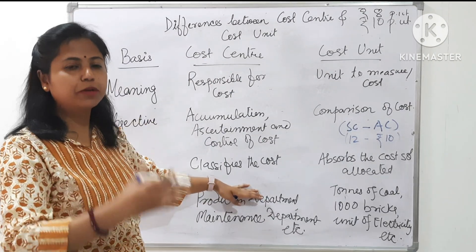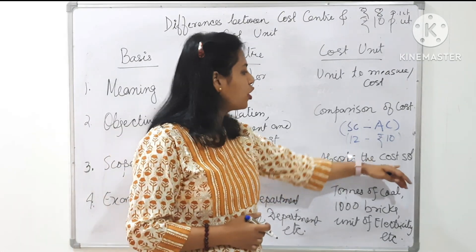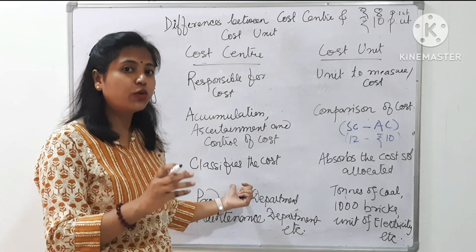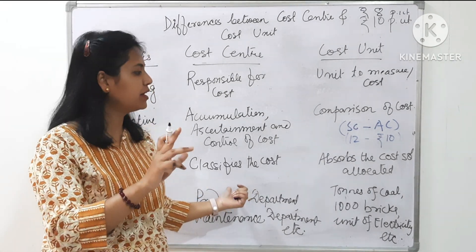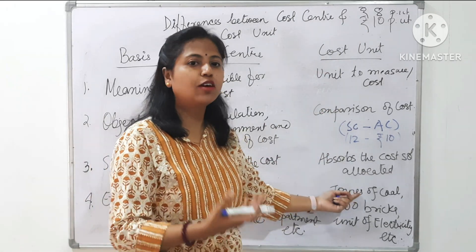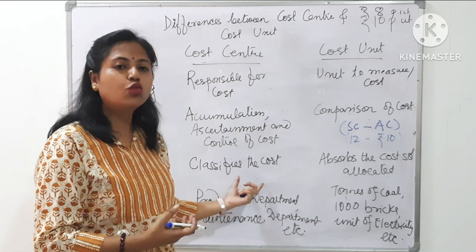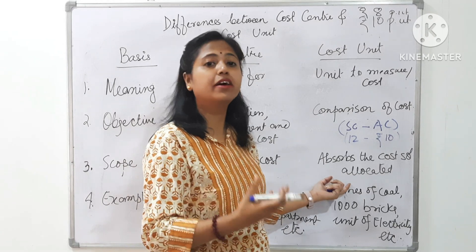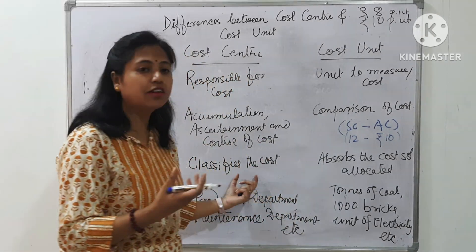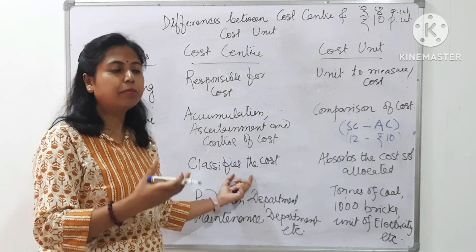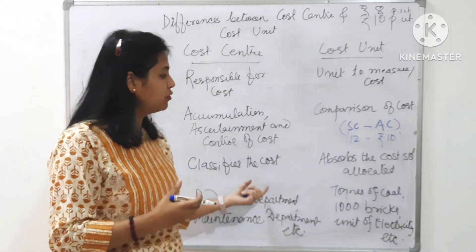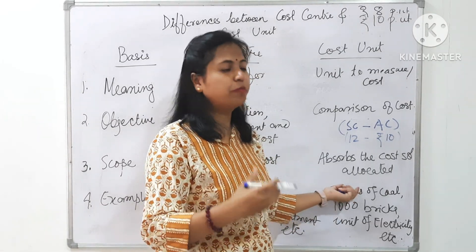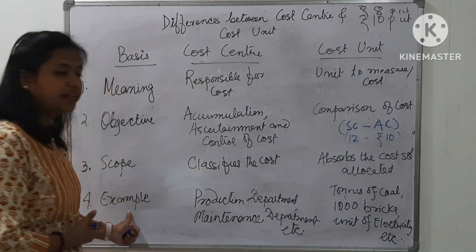Third is scope. The cost center classifies cost in terms of departments, divisions, etc., whereas the cost unit absorbs the cost. The cost allocated to a particular department is absorbed in terms of the cost unit. For example, in a hotel, the cost allocated to the restaurant department will be expressed or absorbed in terms of cost per plate of meal served. For the lodging department, the cost will be absorbed in terms of cost per bed occupancy or cost per room.